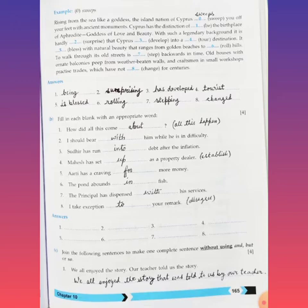Now come to part B, filling the blank with an appropriate word. Number one: How did all this come about? Come about - all this happen. Number two: I should bear with him while he is in difficulty. Bear with.